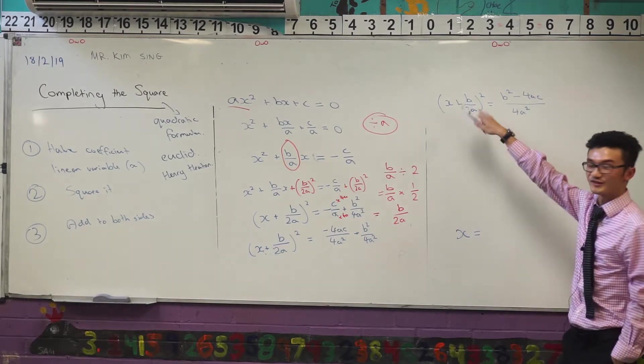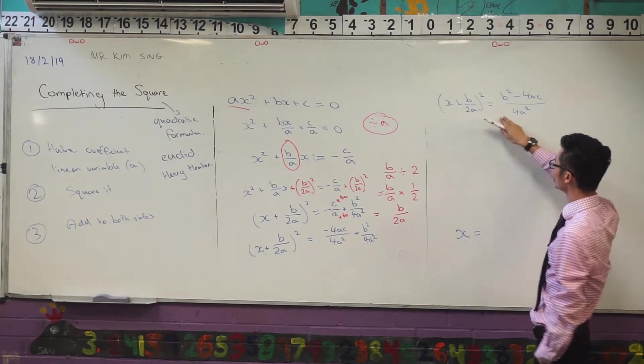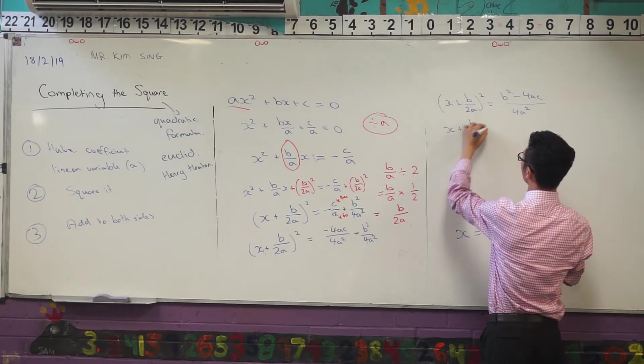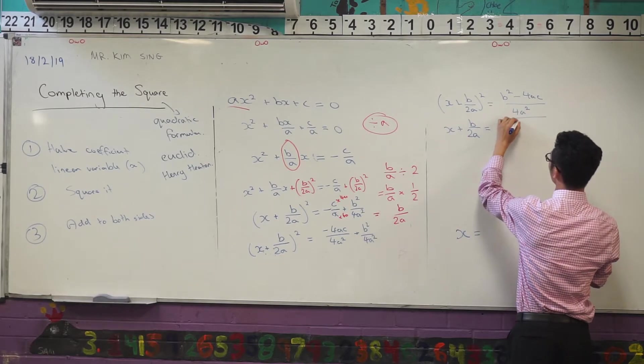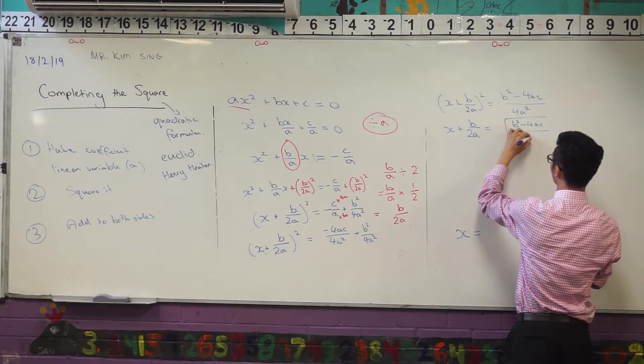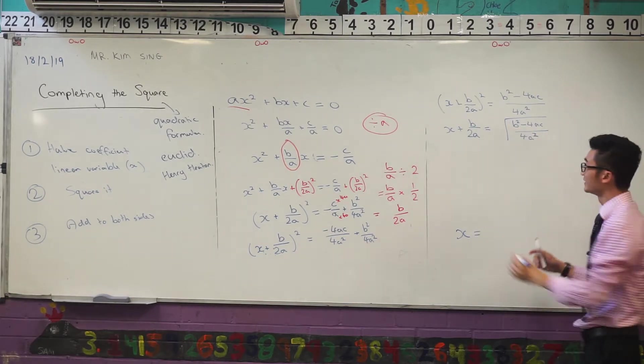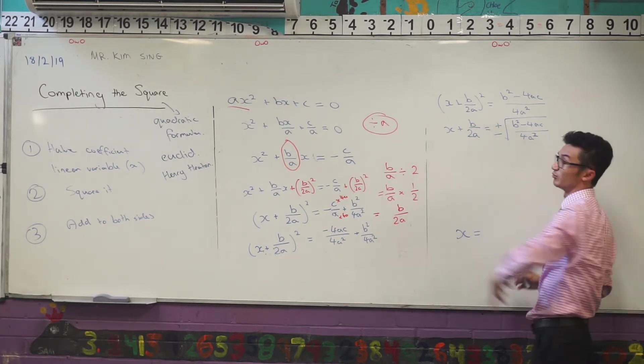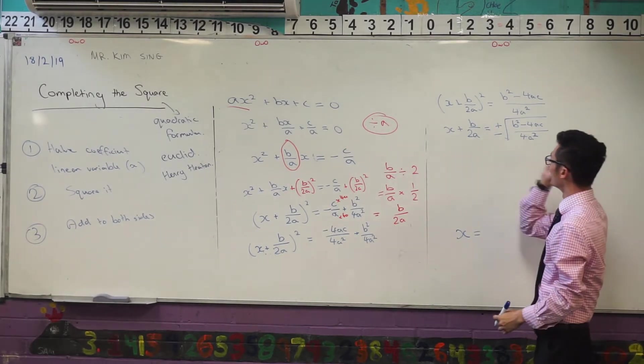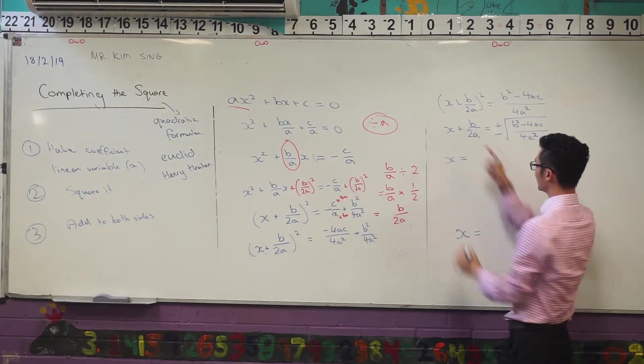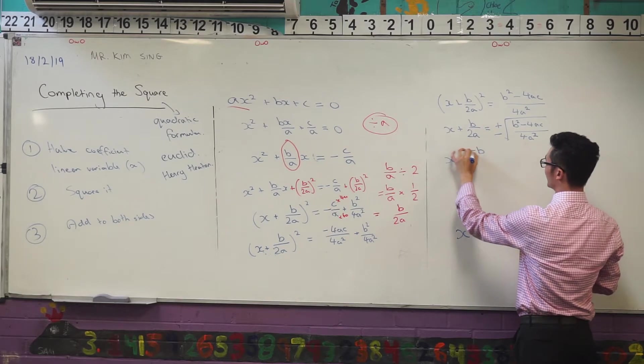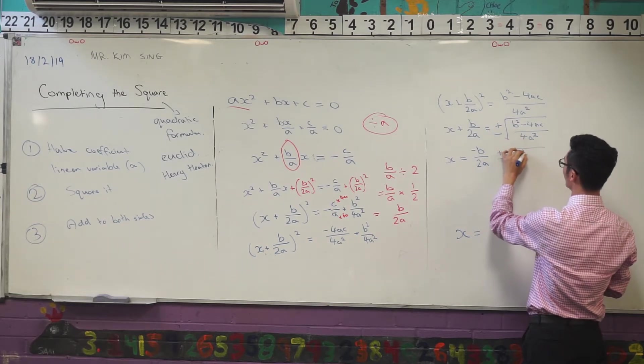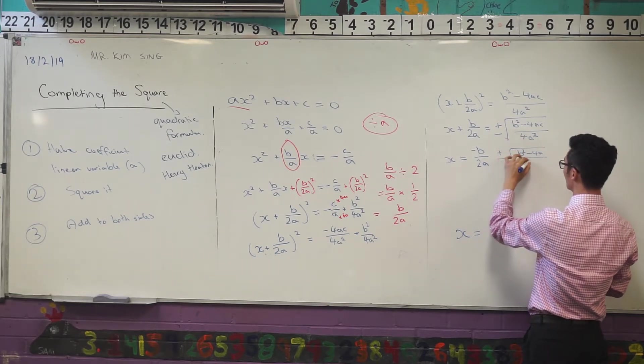x plus b over 2a all squared equals, now I'm going to swap these around. I'm going to put them under a common denominator over there. And we've got 4a squared there. Now remember, what's the goal? The goal is x equals something. So now I'm going to take the square root of both sides to get rid of that square there. And so now I'll get the square root of b squared minus 4ac over 4a squared. Now remember, when I take the square root, if I apply that as an operation, I actually have to consider two cases, the positive and negative case. I'm going to put that there. And then one more step, I can take this over to the other side, negative b on 2a plus or minus square root of b squared minus 4ac over 4a squared.